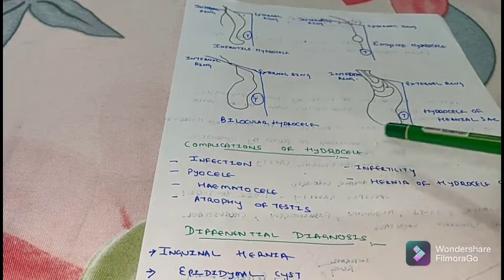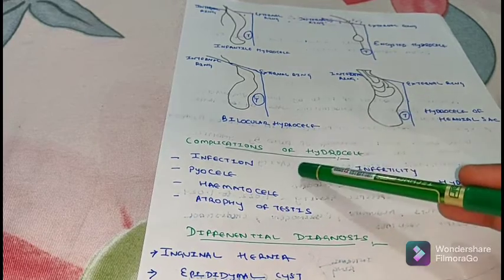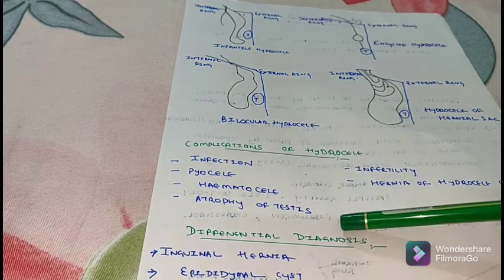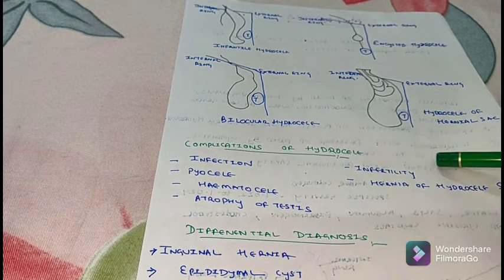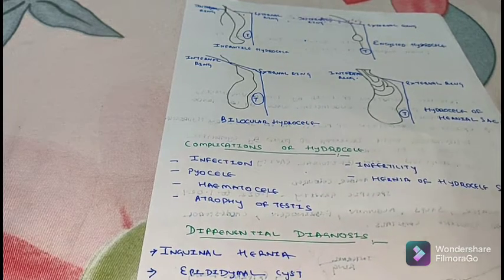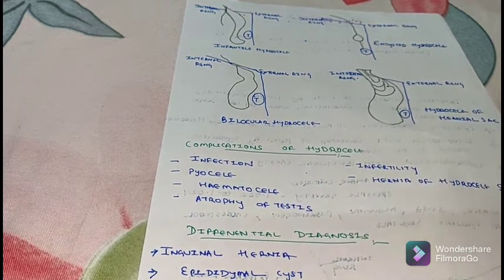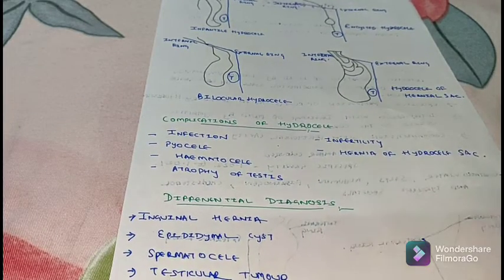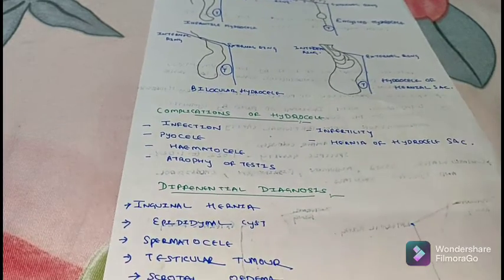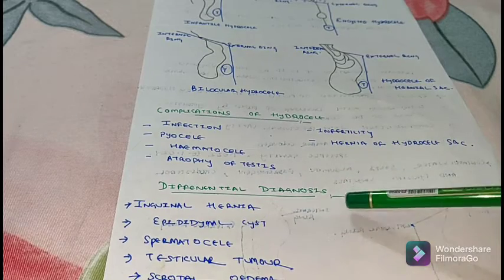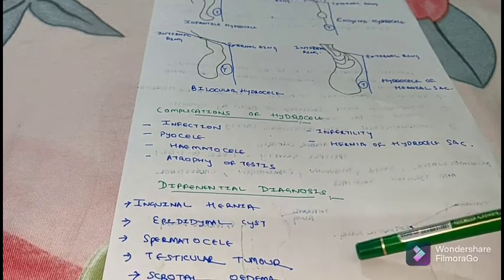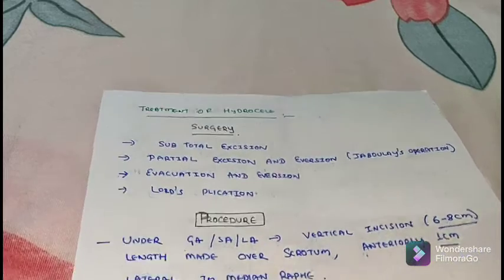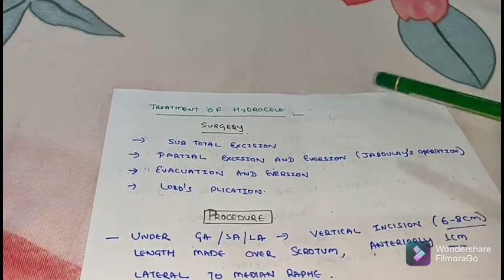Complications of hydrocele include: infection, pyocele, hematocele, atrophy of testes, infertility, and hernia of the hydrocele sac. In the differential diagnosis of hydrocele, consider: inguinal hernia, epididymal cyst, and spermatocele.